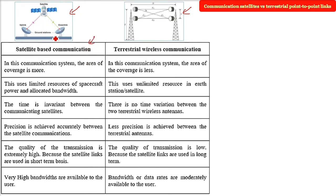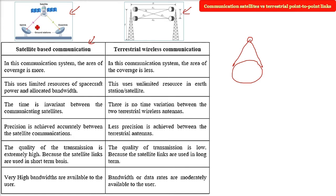In satellite-based communication the area of coverage is much higher — a single geostationary satellite can cover around 42.2% of the Earth. In terrestrial wireless communication the coverage area is not comparable to satellite. Satellite uses limited spacecraft power and allocated bandwidth as provided by the ITU, whereas terrestrial wireless communication uses unlimited resources at the earth station.